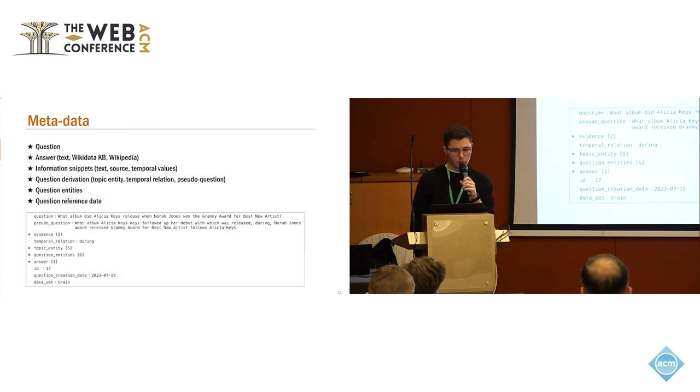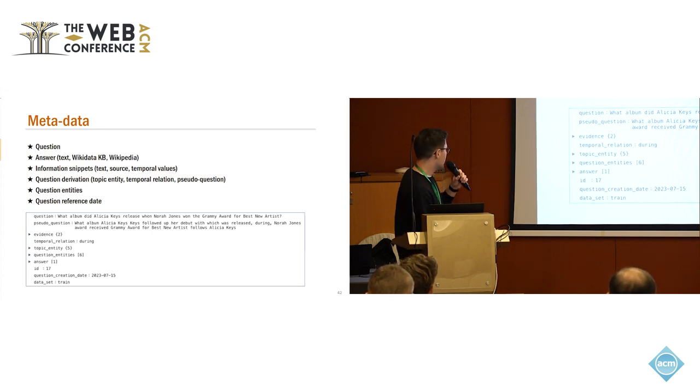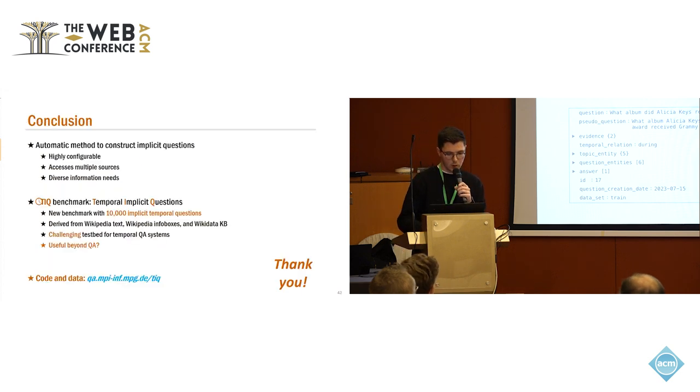To give a snippet of how the data looks like, we provide the final question. We also provide this intermediate pseudo question. We provide the evidence that the question is derived from, the temporal relation that was used for construction, the topic entity with its attributes, the question entities that we identified, the answer normalized to the Wikidata knowledge base and also to Wikipedia, and also as a textual label. Finally, we provide a question creation date which could serve as a reference, and obviously also other metadata like the set and so on.